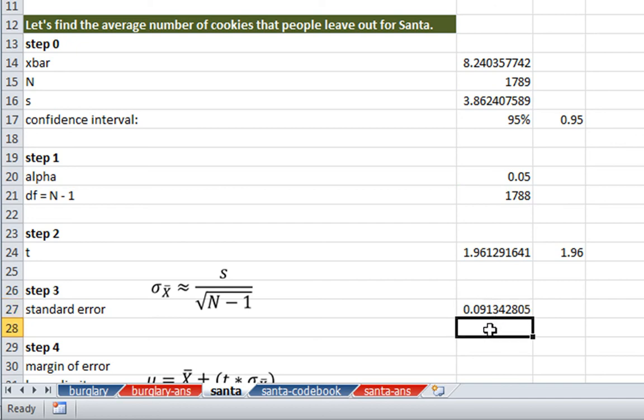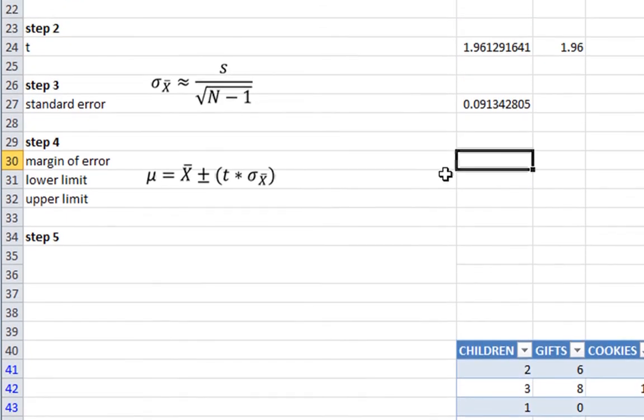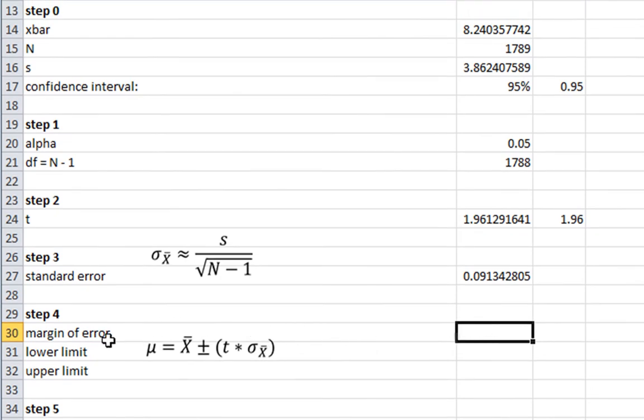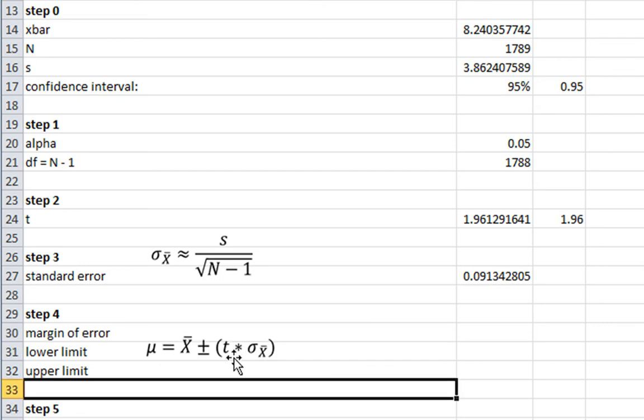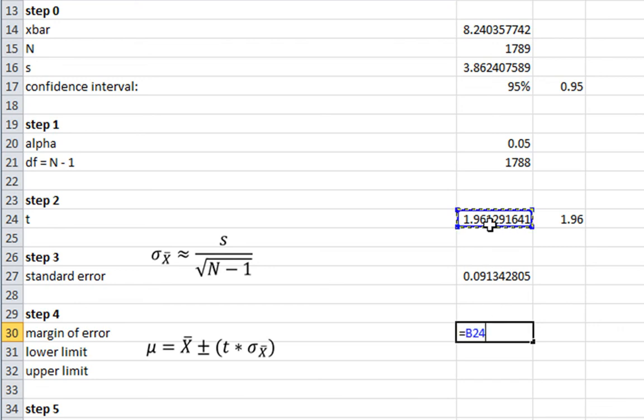Our next step is to calculate our confidence interval. I'm suggesting the first step we can do here is to calculate the margin of error, which is just t times sigma x bar. So our margin of error is just t times the standard error. Our upper limit and our lower limit are just going to be the mean plus or minus our margin of error. For the lower limit, we take our mean and we subtract our margin of error. For the upper limit, we take our mean and we add our margin of error.